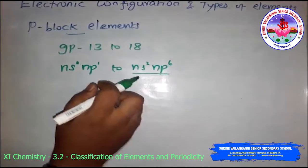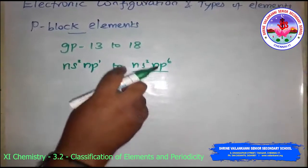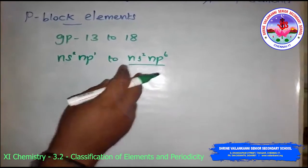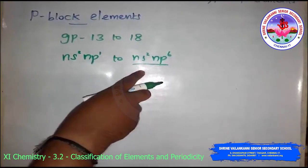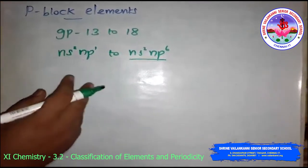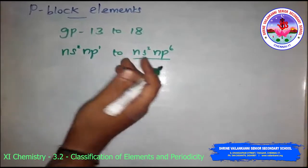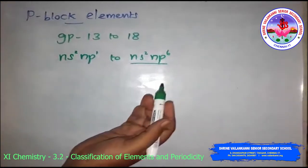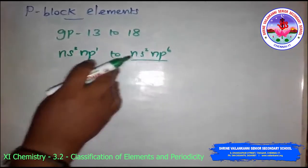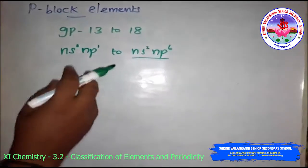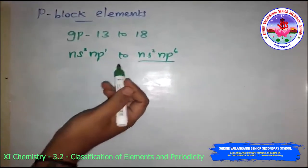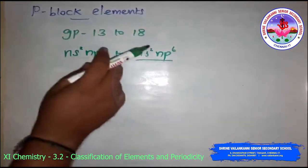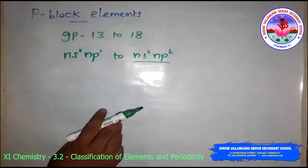Because the p orbitals are completely filled, it is very difficult to alter this stable arrangement by addition or removal of electrons, so noble gases exhibit very low chemical reactivity. Preceding the noble gas family are two chemically important groups: the halogens in group 17 and the chalcogens in group 16. These two groups have highly negative electron gain enthalpies and readily add one or two electrons respectively to attain a stable noble gas configuration. Non-metallic character increases from left to right across the period, and metallic character increases going down the group.